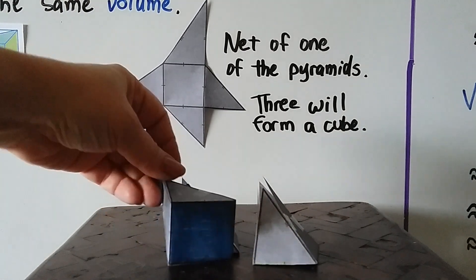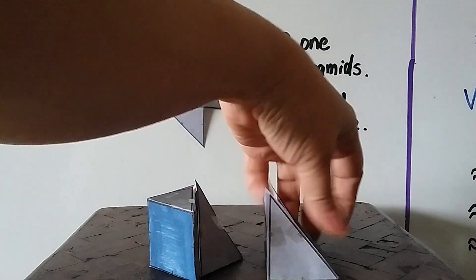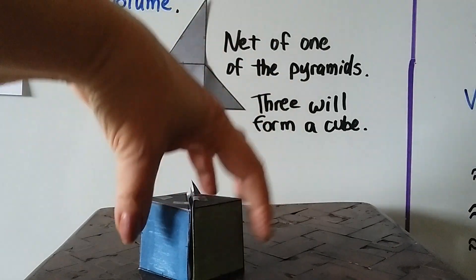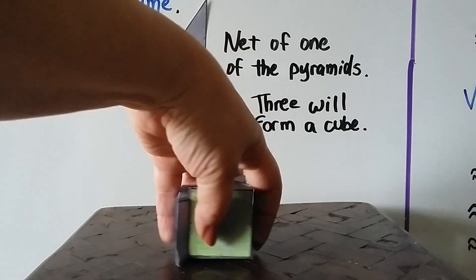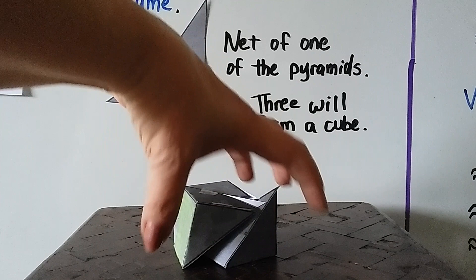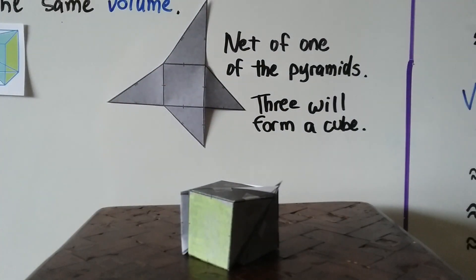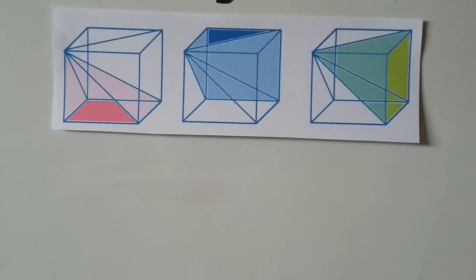All we have to do is put them together like this, and then put this one here — and look, I made a cube! So we have three congruent square pyramids that have the same volume that make that cube.